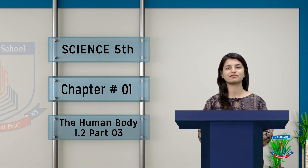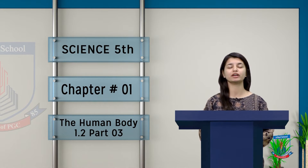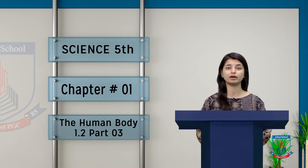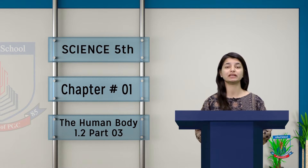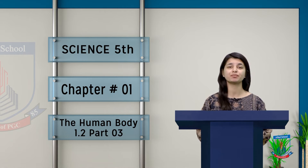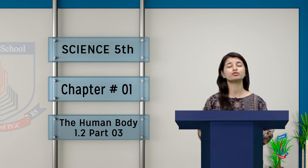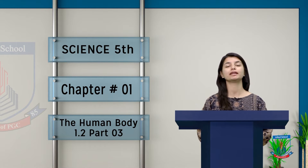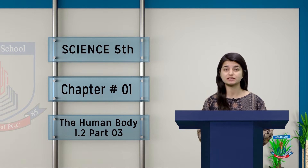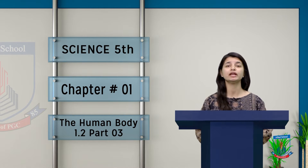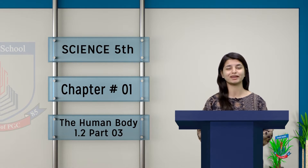Hello and assalamu alaikum grade 5. I am your science teacher Sabah and we are going to do your book chapter number 1 about the human body. So far we have talked about the nervous system and the circulatory system. Today we will go to the circulatory system and cover the question and answers so that we are ready to move to the next topic.